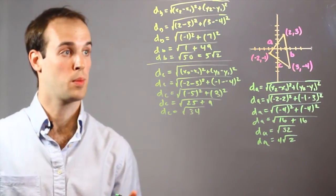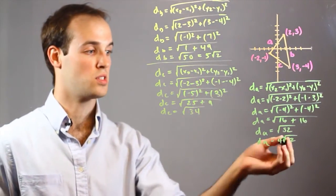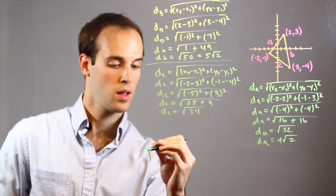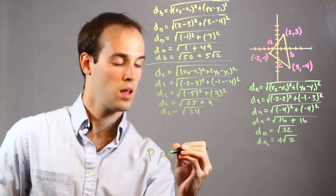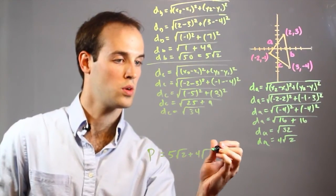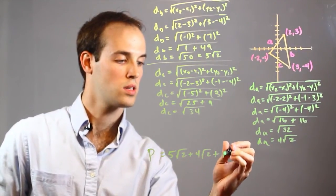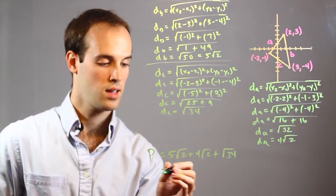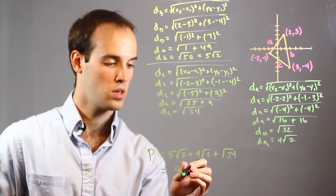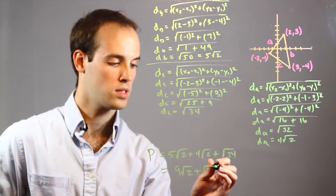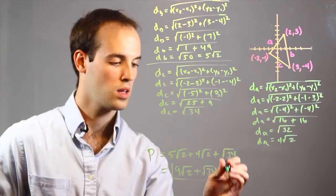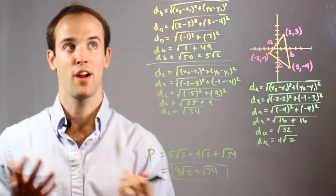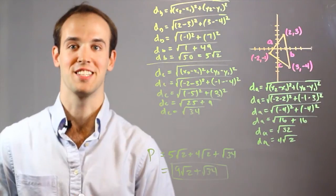So now, to find the perimeter, all I have to do is add up each of these three: 5 root 2 plus 4 root 2 plus root 34. And I can simplify these to get 9 root 2 plus root 34. So there it is. Again, I'm Drew Moyer, and this is how to find perimeter using the distance formula.